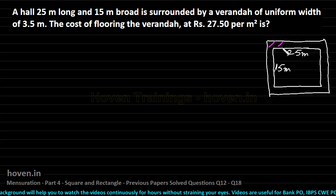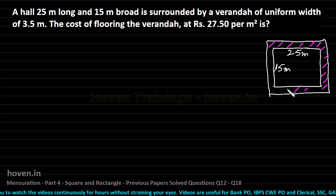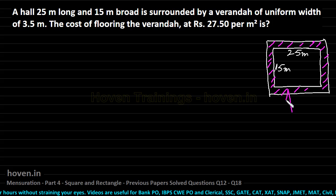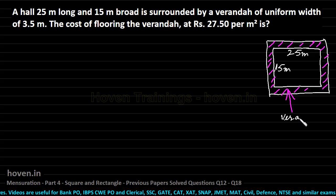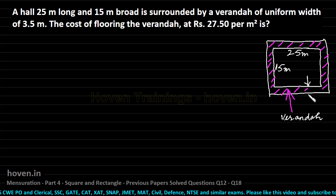We can mark this as the veranda. So we can write that this is the veranda and its uniform thickness has been given to us as 3.5 meters.